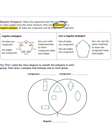All of our sides are four centimeters, and all of our angles are 108 degrees. Now, in a not-regular polygon, not all sides are congruent — they're not all the same — and not all angles are congruent, meaning they don't all have the same number of degrees. So remember: regular polygon — all sides and angles are congruent; not a regular polygon — not all sides and angles are congruent.